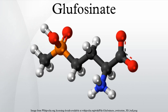Glufosinate is a broad-spectrum systemic herbicide with a chemical formula C5H15N2O4P. It irreversibly inhibits glutamine synthetase, an enzyme necessary for the production of glutamine and for ammonia detoxification. Application of glufosinate to plants leads to reduced glutamine and elevated ammonia levels in tissues, halting photosynthesis, resulting in plant death.